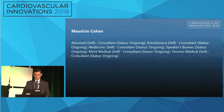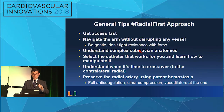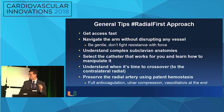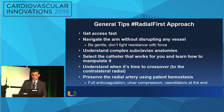So, best radial — general tips: Get access fast. Navigate the arm without disrupting any vessel, be gentle. Never fight against resistance with force. Transradial access is all about finesse. Understand complex living anatomies. Select the catheter that works for you — no fancy catheter. Just use whatever works for you, like Judkins, and be fast and quick and do a good diagnostic angiogram, because a non-diagnostic angiogram is a usual complication. Understand when it's time to cross over — don't kill yourself trying to prove you can do it.